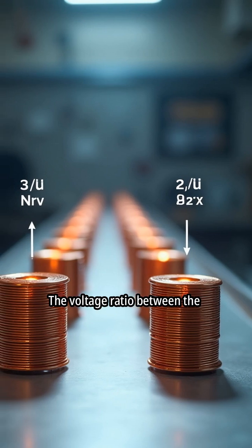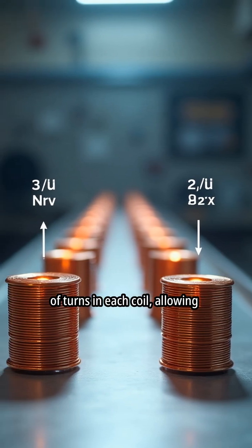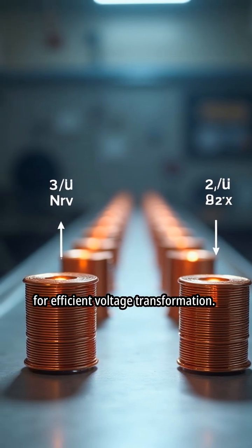The voltage ratio between the coils depends on the number of turns in each coil, allowing for efficient voltage transformation.